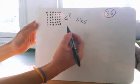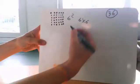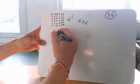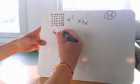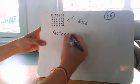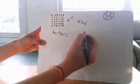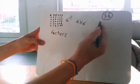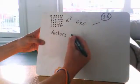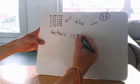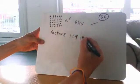6 exponent 2. These are the factors of 6 exponent 2, which is 36: 1, 2, 9, 18, and 36.